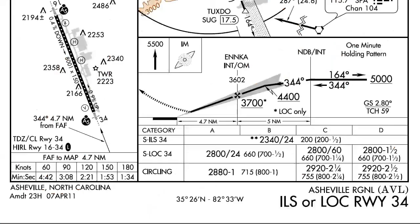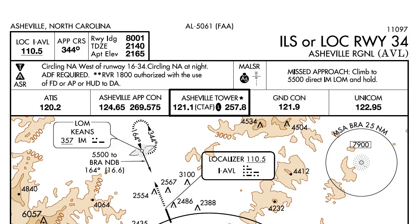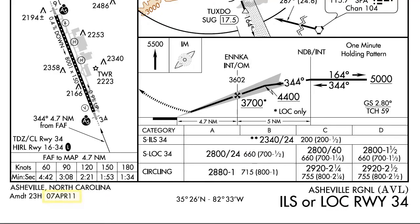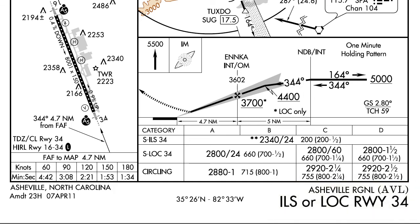Now let's take a look at the bottom margin data. In the lower left corner we have the city and state name again, and then we have the amendment number and the date of the amendment. The Julian date from the top, 11097, corresponds with the 7th of April 2011. In the middle we have the lat/long coordinates of the airport itself, and in the lower right again we have the procedure name and the airport that the procedure goes to. And that's all for margin data on an FAA instrument approach chart.